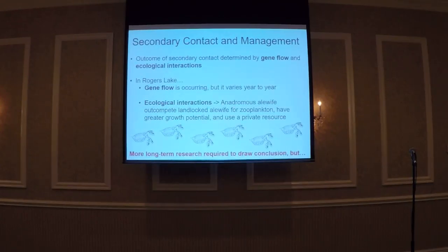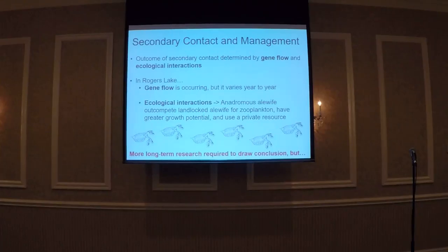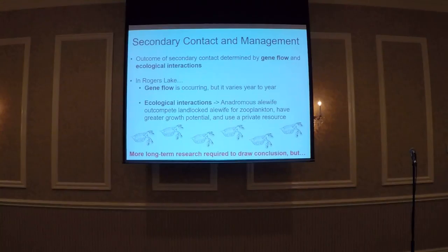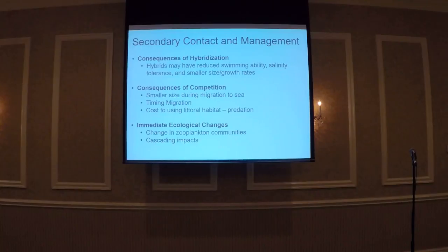What does this mean for Rogers? Secondary contact outcomes depend on gene flow and ecological interactions. Weak gene flow combined with strong ecological interactions sets up the opportunity for speciation, whereas strong gene flow and weak ecological interactions could lead to population fusion. For Rogers, we have some gene flow, and that might increase as the run gets going again. As for ecological interactions, anadromous fish are really strong competitors that grow fast and can use private resources. What we may see is not so much competition but a shift in habitat use. We need more long-term data to draw complete conclusions.